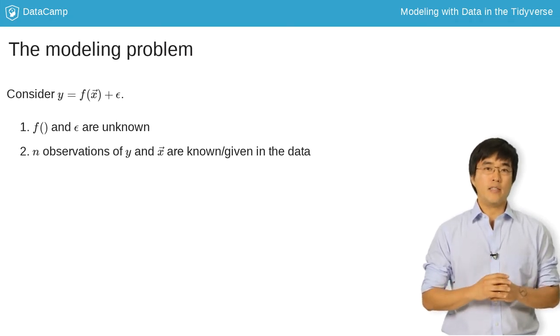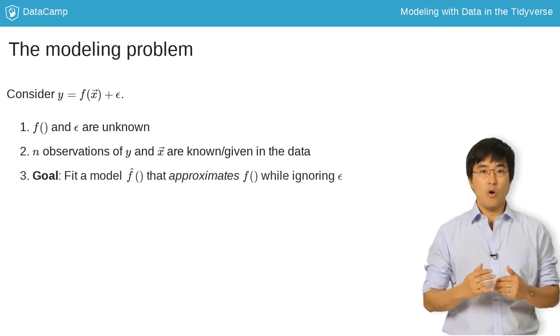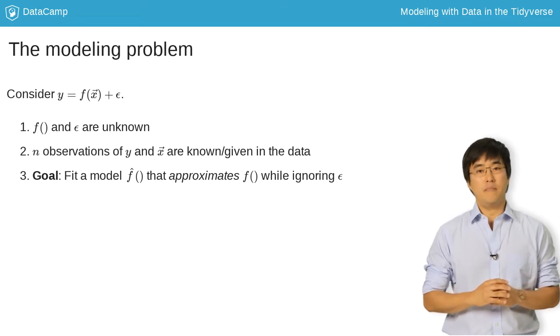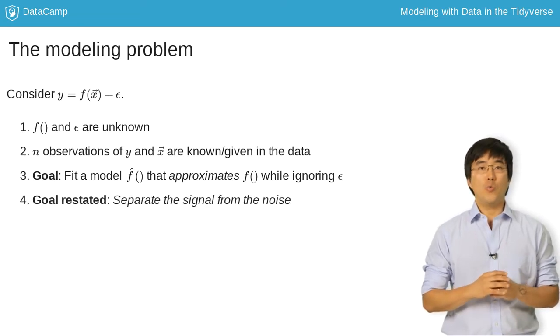Using y and x, the goal is to construct, or fit, a model f-hat that approximates the true f, but not epsilon. In other words, you want to separate the signal from the noise.